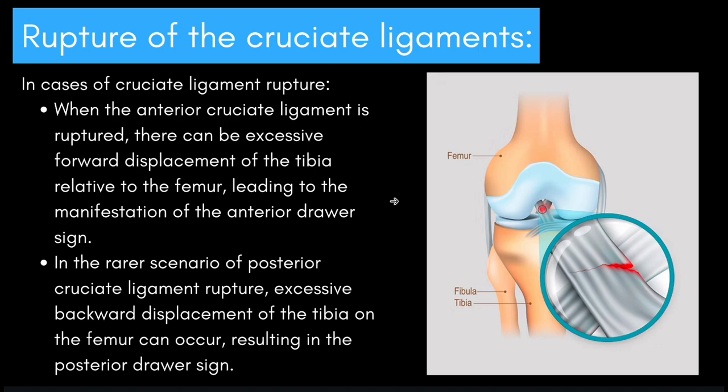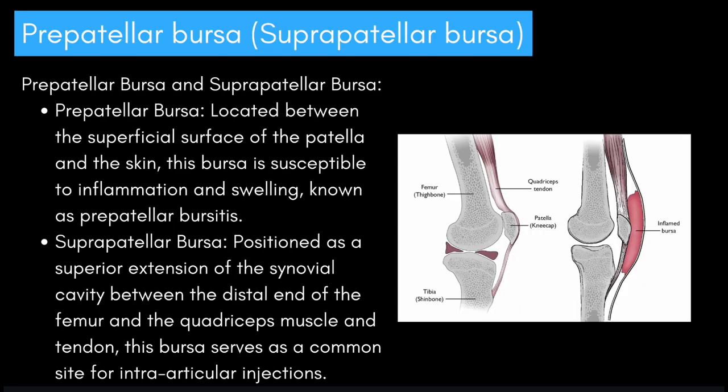Moving on, we're going to be talking about the rupture of the cruciate ligaments. In cases of anterior cruciate ligament rupture, there can be excessive forward displacement of the tibia relative to the femur, leading to the manifestation of the anterior drawer sign. In the rare scenario of posterior cruciate ligament rupture, excessive backward displacement of the tibia on the femur can occur, resulting in the posterior drawer sign.